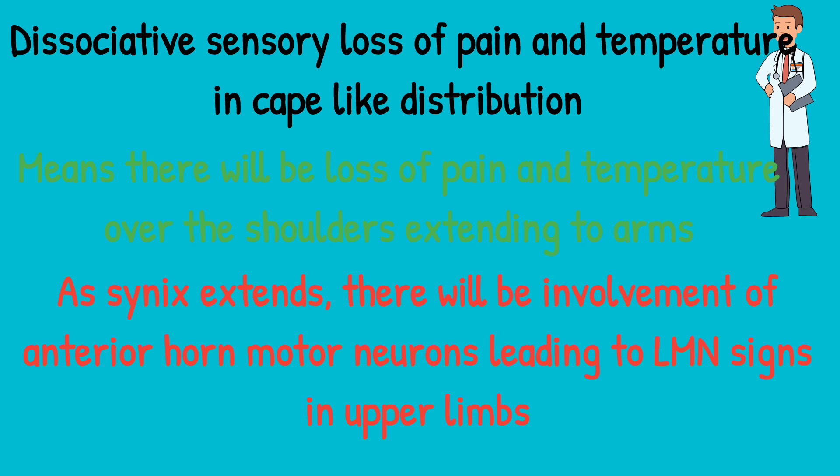As the cavity extends, it also involves the anterior horn motor neurons, leading to lower motor neuron signs in the upper limbs — meaning there will be weakness of the arms and movement problems in the patient.